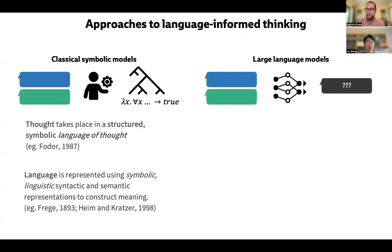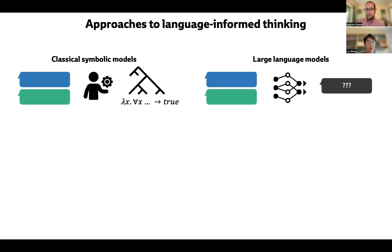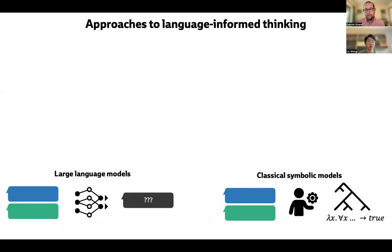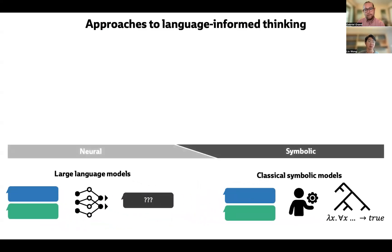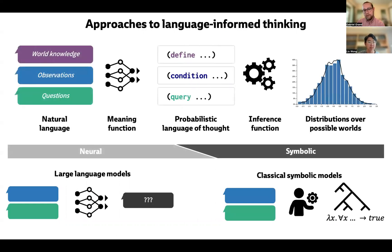On the other end of the modeling spectrum, the LLM approach essentially suggests learning all these kinds of structures latently from patterns in linguistic data. In this talk, however, we propose a new computational framework that synthesizes the strengths of these two proposals. Rather than attempting to learn thinking from language, we propose an architecture that starts with a substrate designed for thinking — a probabilistic language of thought — which we formally instantiate using probabilistic programs, a general substrate that can express arbitrary generative models over probable world states, casting many kinds of common sense reasoning as Bayesian inferences. On top of that, we propose modeling language by translating utterances into code expressions in this probabilistic language of thought, using large language models trained on both language and code to instantiate this mapping function in a context-sensitive and broad-coverage way.